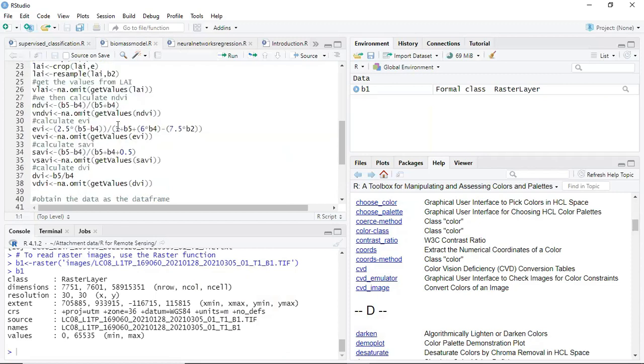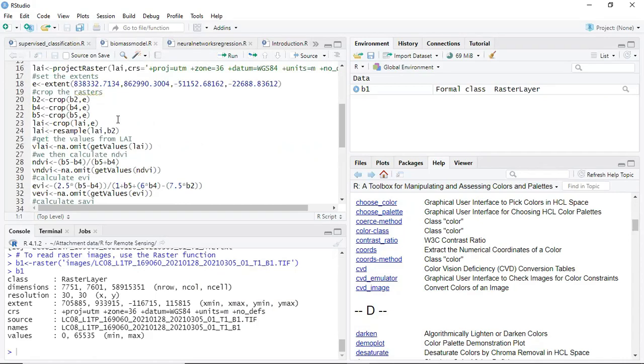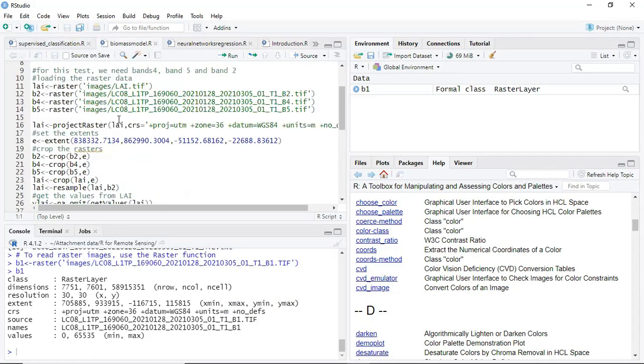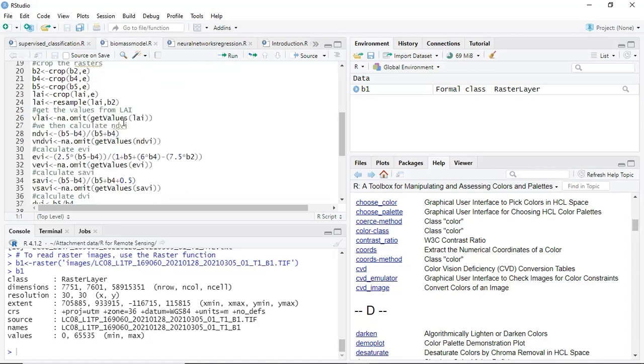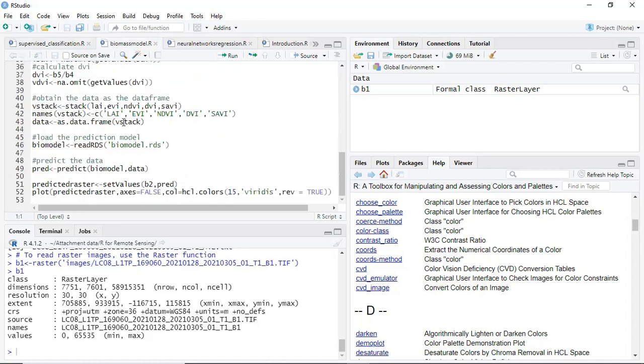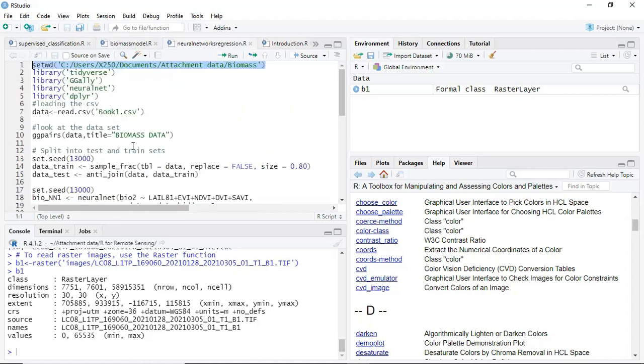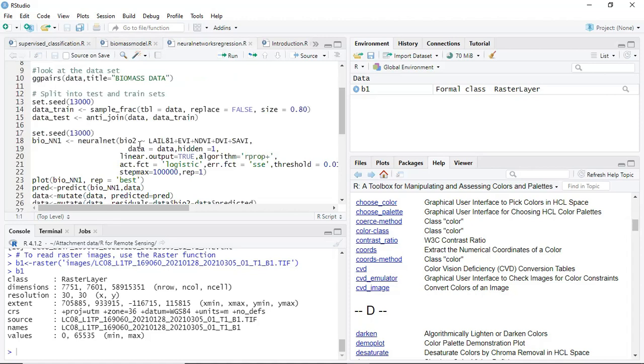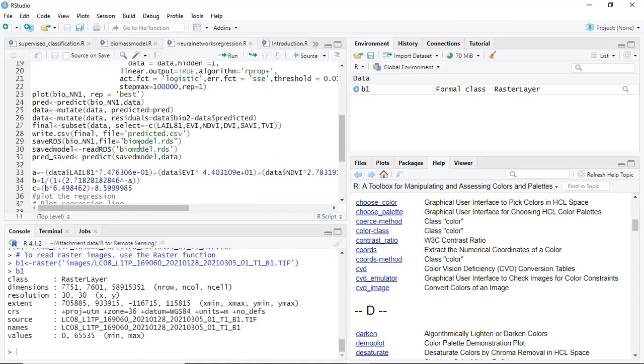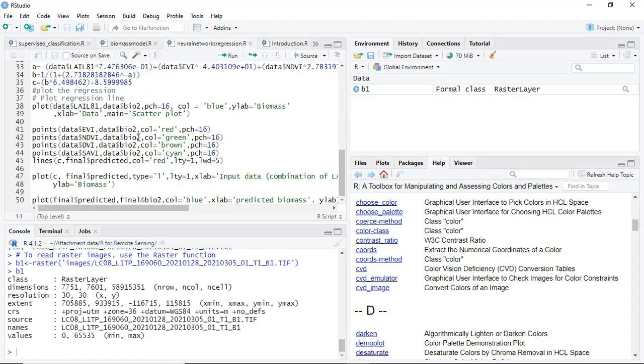This is a model, a code to create a model that can predict biomass from satellite images. I'm not going to go into the details. You also have this one here, it's a regression model.